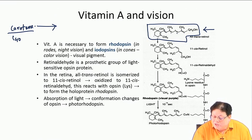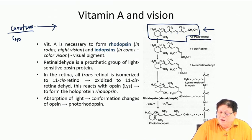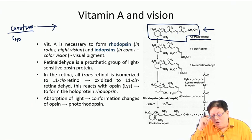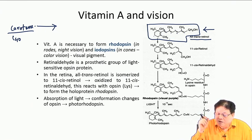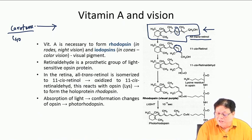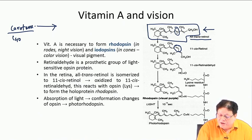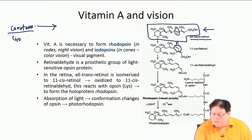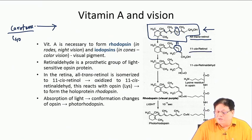All-trans retinol is converted by an enzyme called retinol isomerase. The double bond at position 11 is now in the cis form — doing the numbering 1, 2, 3, 4, 5, 6, 7, 8, 9, 10, 11 — that position is called 11, so this is called 11-cis retinol.